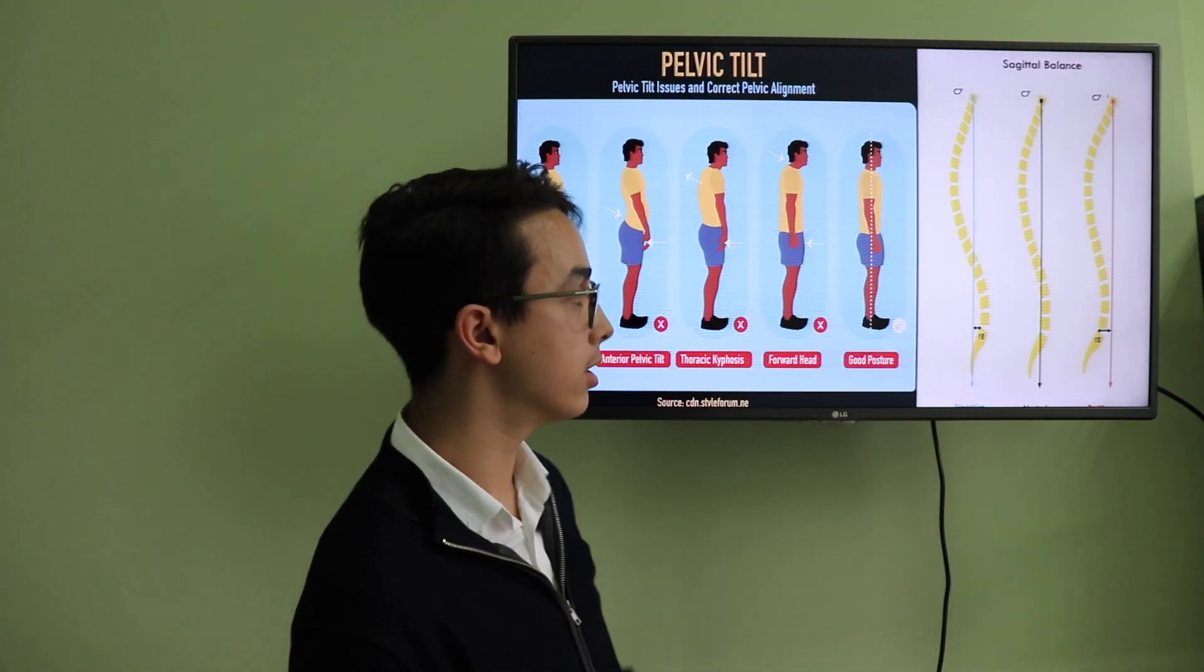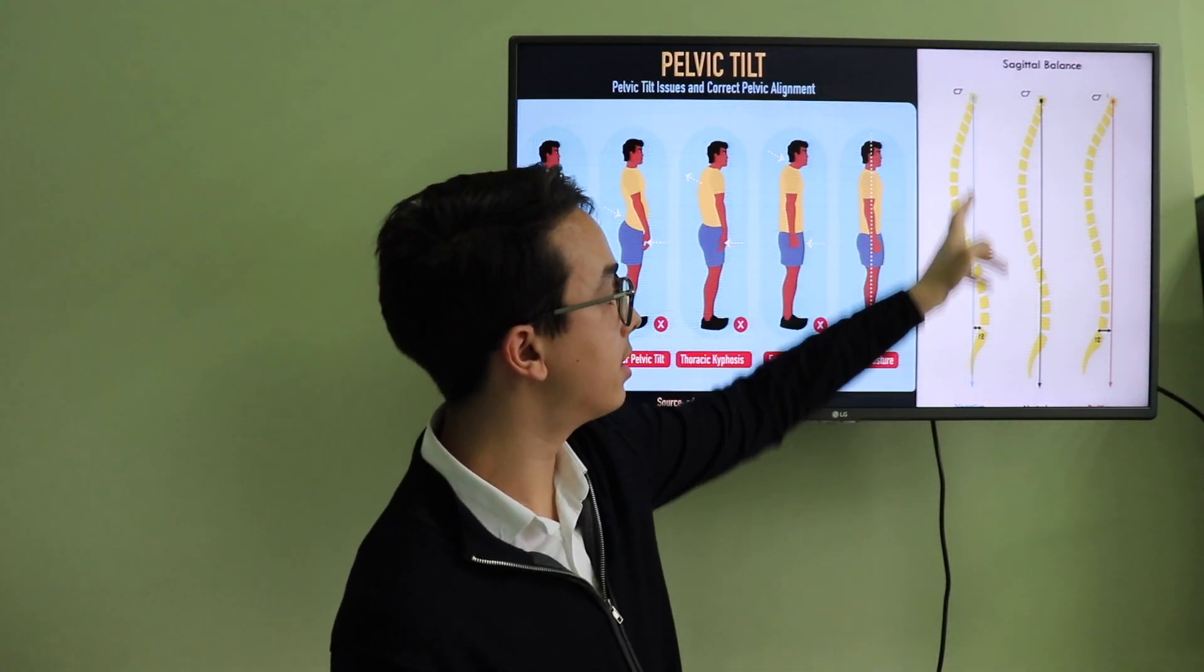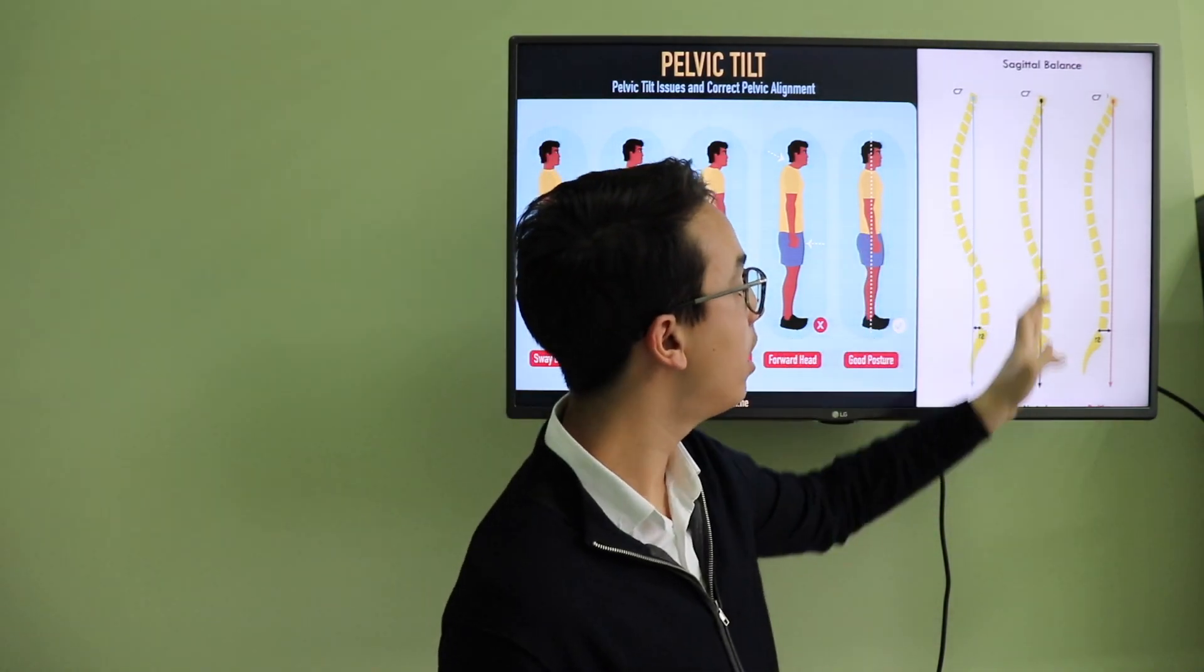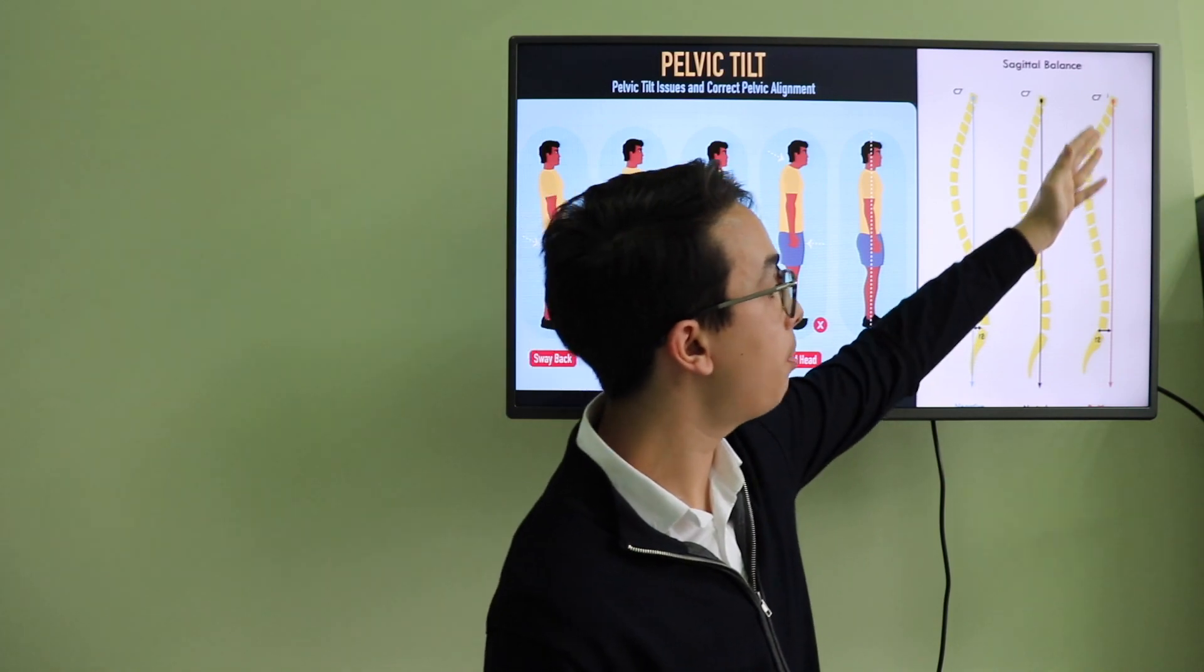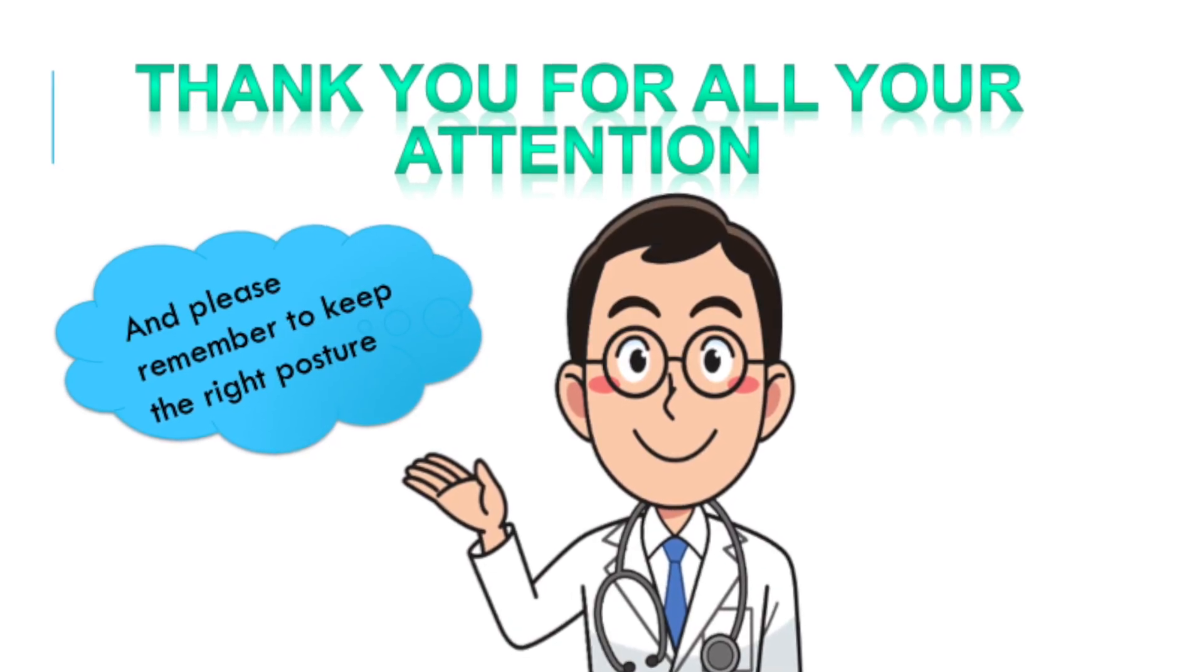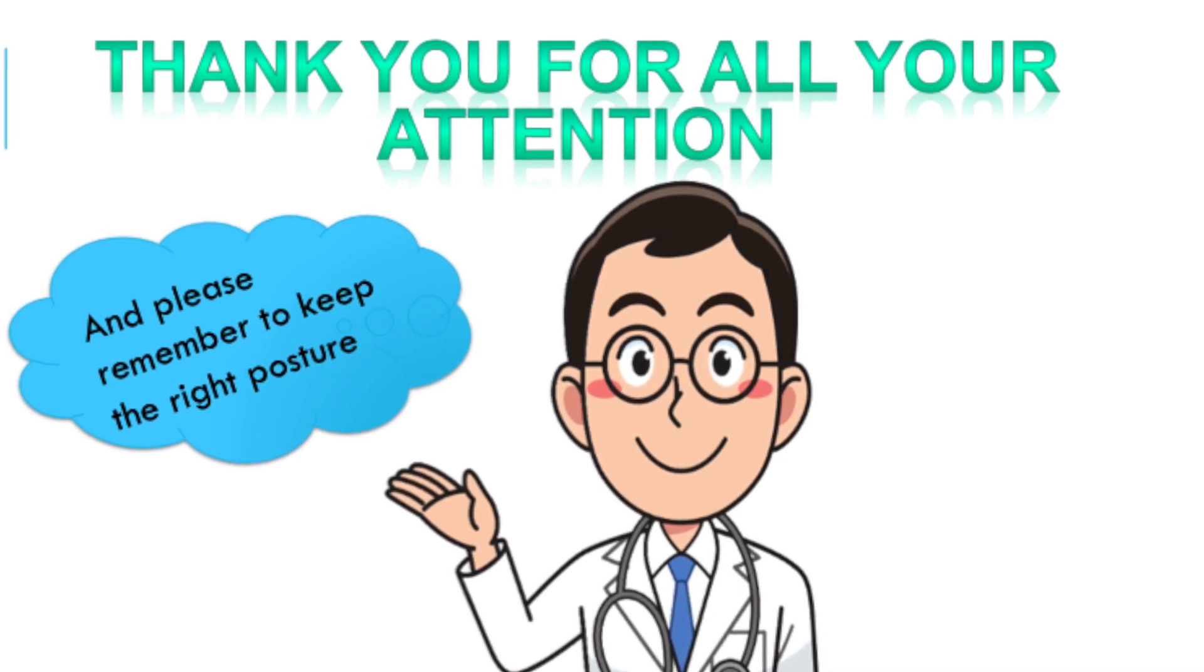These are the sagittal balances. When the C7 passes here, that's called the negative. When the C7 passes through the spine, that's called the neutral. And when the C7 doesn't pass on the spine, that's called the positive one. Thank you for all your attention and please remember to keep the right posture.